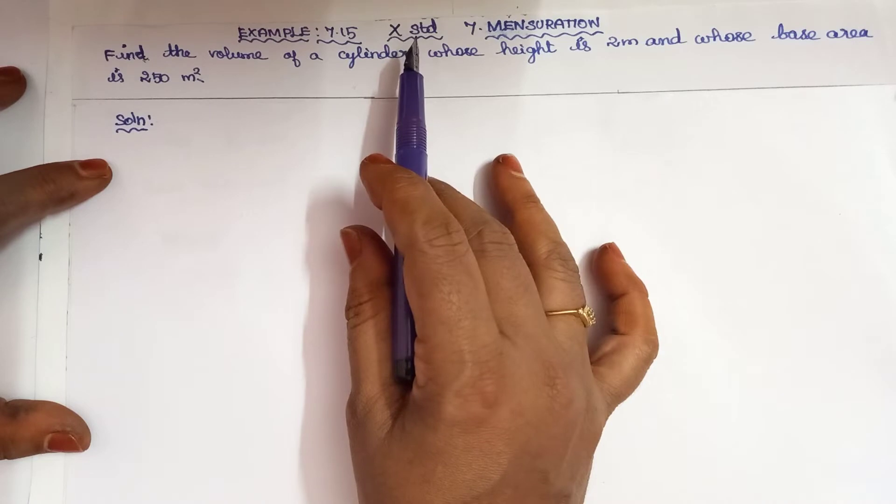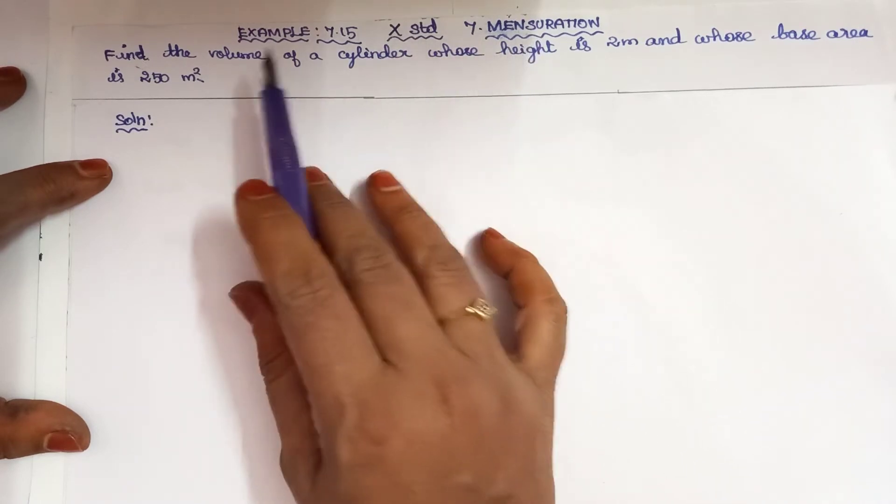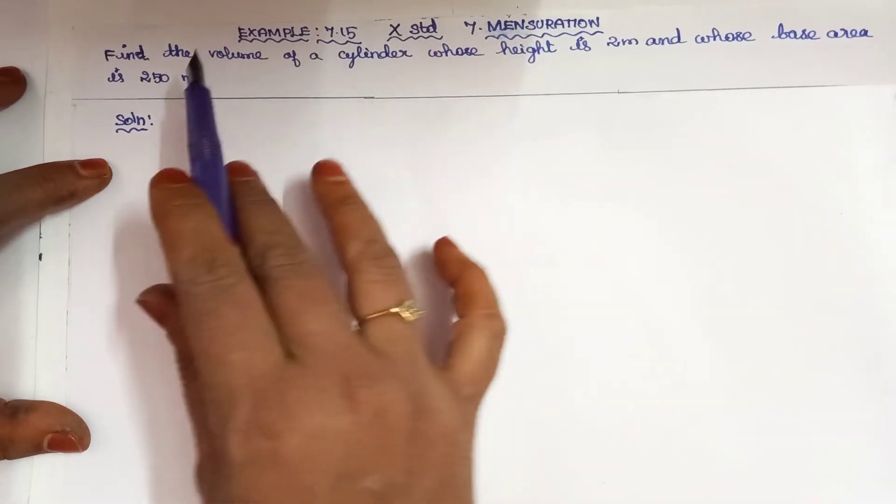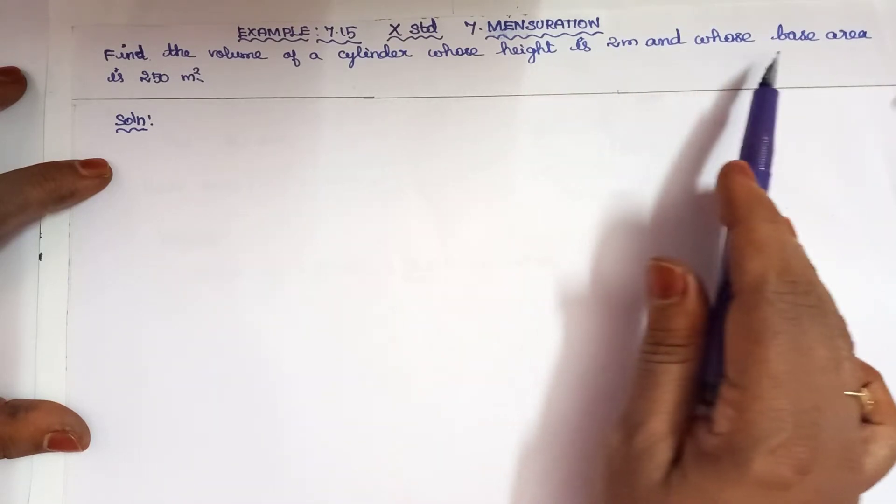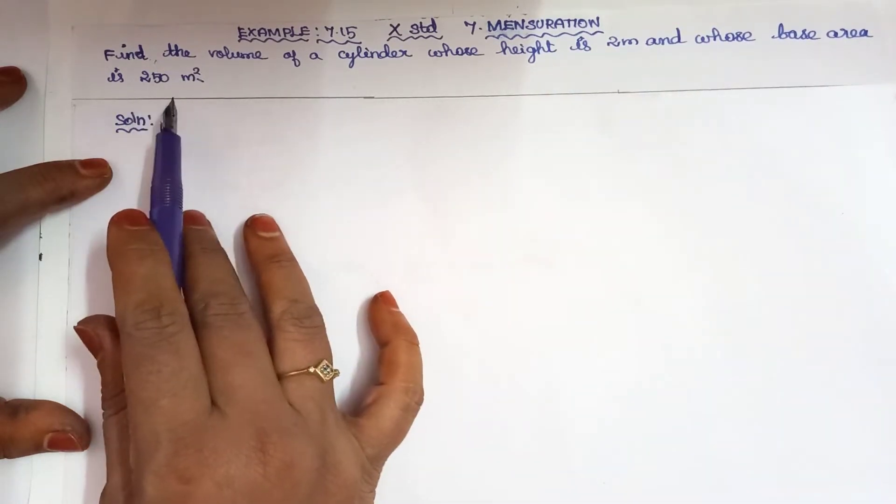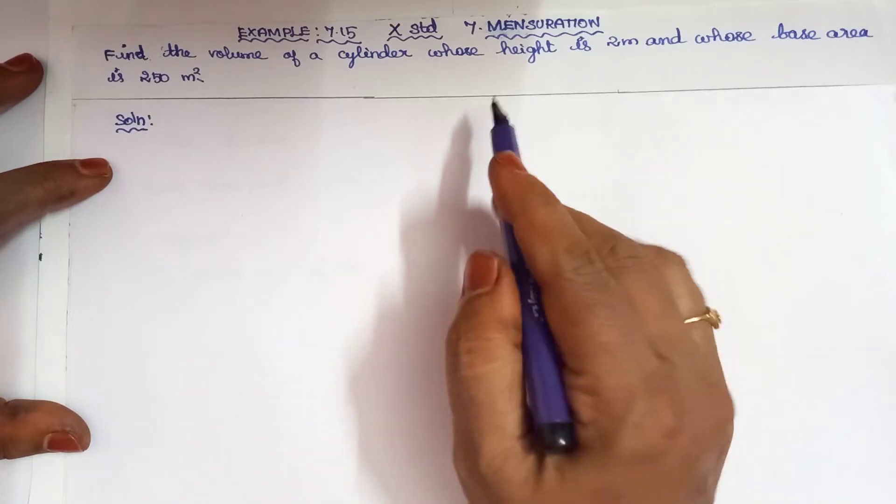Good morning to everyone. 10th standard, 7th chapter mensuration, example 7.15. Find the volume of a cylinder whose height is 2 meters and whose base area is 250 meter square.